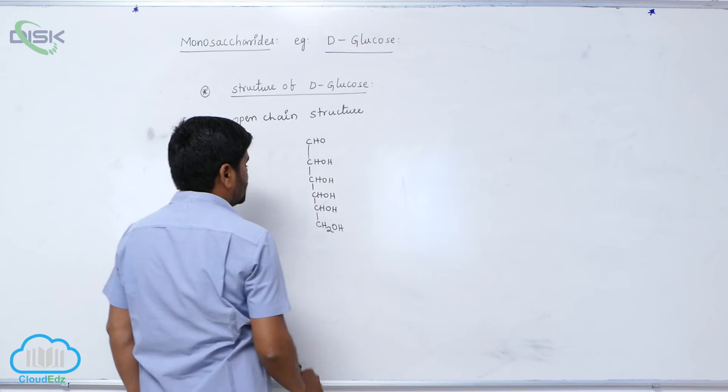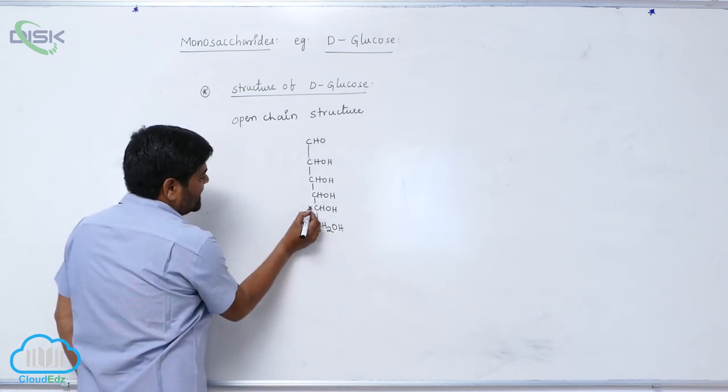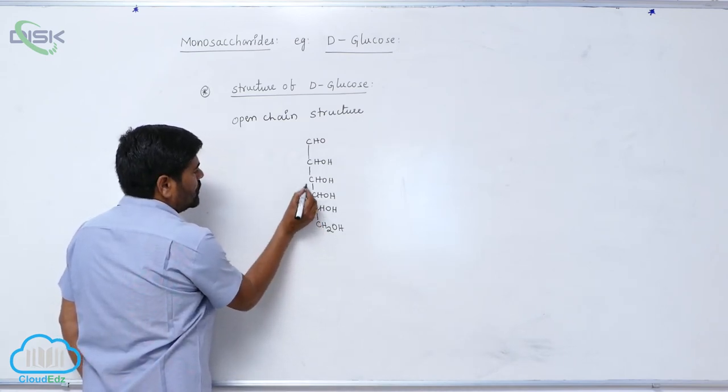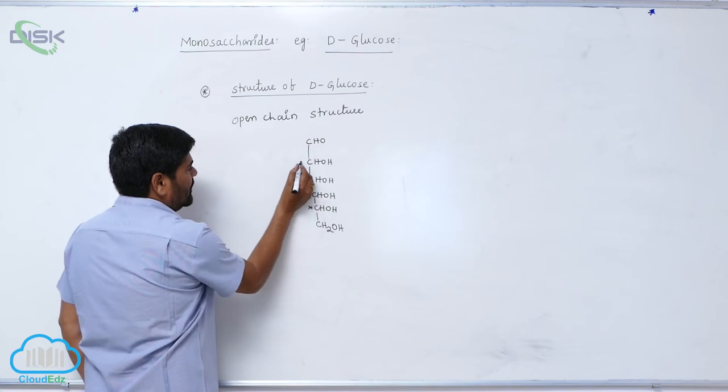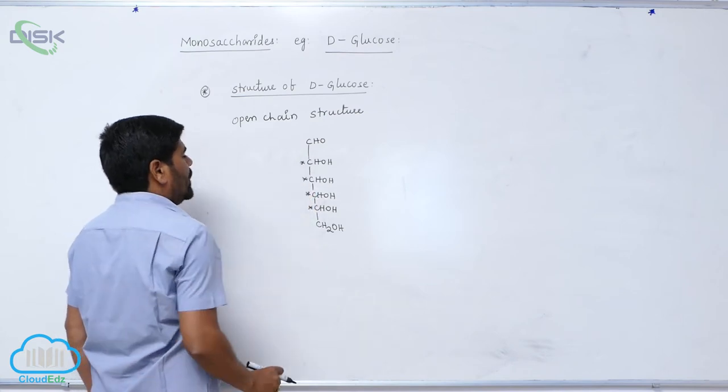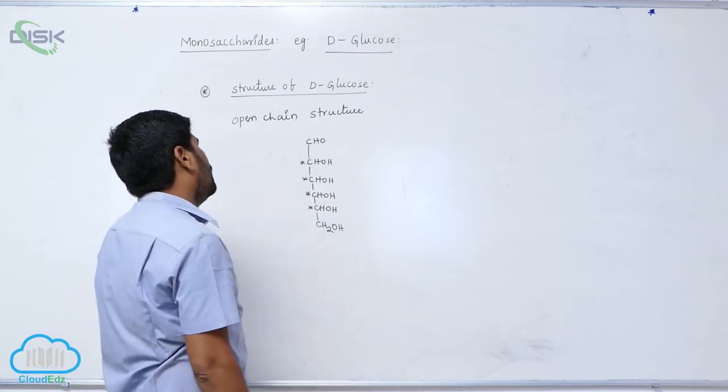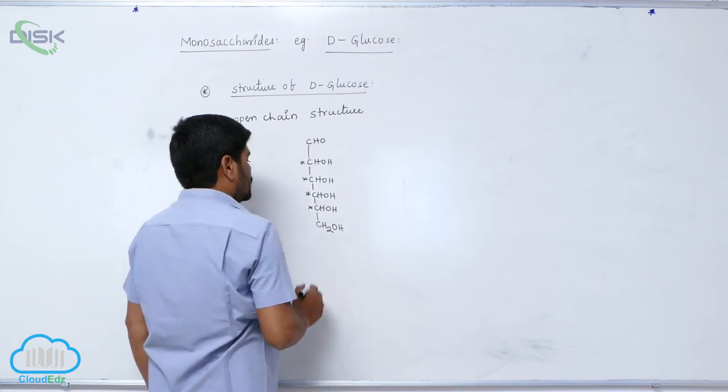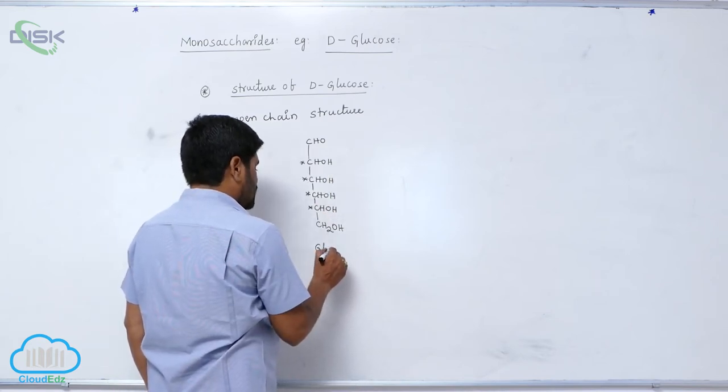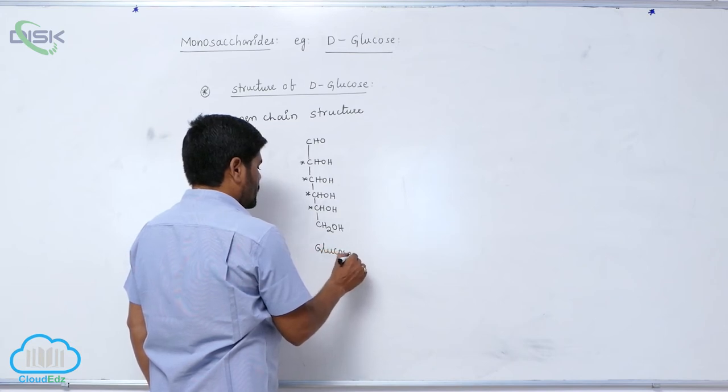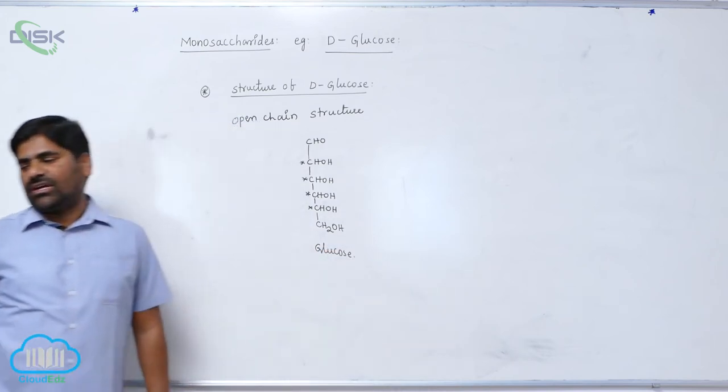Primary alcoholic linkages. So it is a chiral center - two, three, four. So therefore, how many chiral centers? Four chiral centers. So this is the glucose open chain structure.